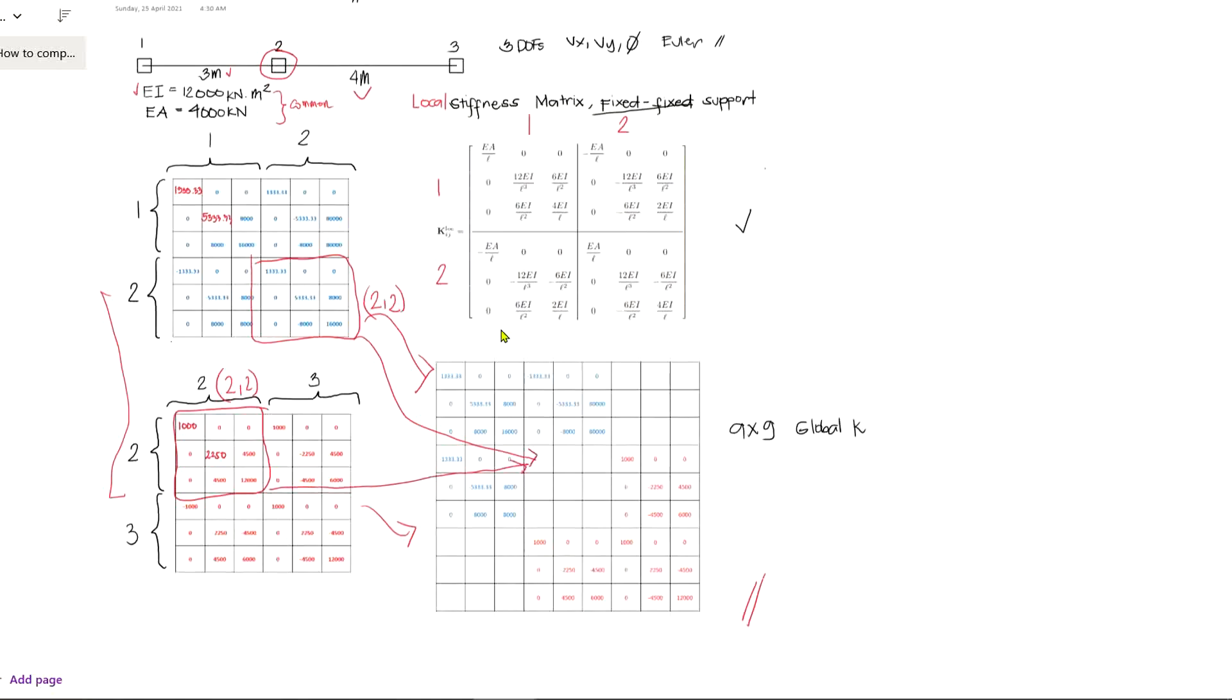Now if we look at the global stiffness matrix, this is from block one-one, block one-two, block two-one, and block two-two. In the same manner, this is from block two-two, block two-three, block three-two, and block three-three. By this time, you can tell that entries at columns and rows 4, 5, and 6 of the global stiffness matrix compose entries from both local matrices.